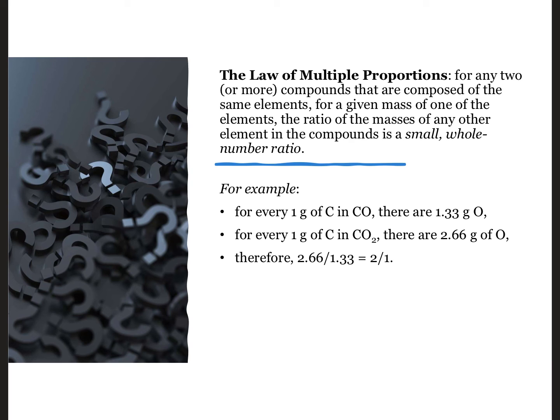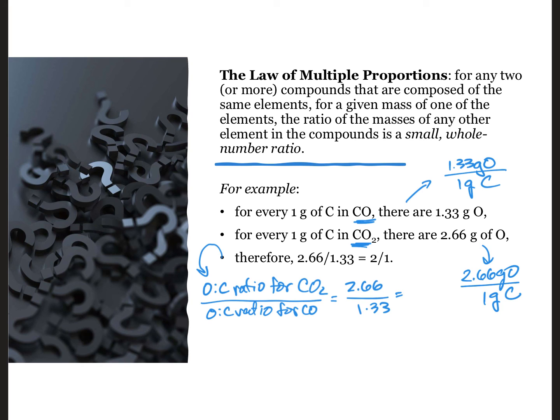For example, in carbon monoxide, CO, for every 1 gram of carbon present, there are 1.33 grams of oxygen. If we add more oxygen to the compound to make carbon dioxide, CO2, now we'll have 2.66 grams of oxygen for every 1 gram of carbon. A comparison shows us that, by mass, carbon dioxide will have 2 oxygens for every 1 oxygen in carbon monoxide, a fact that's noted in the chemical formula by the subscripts.